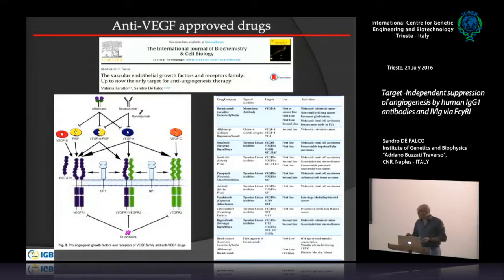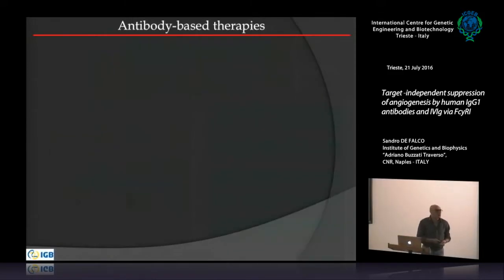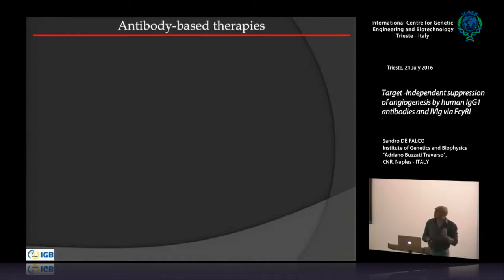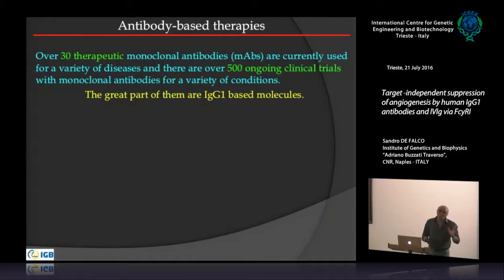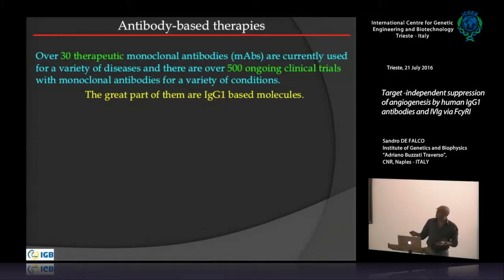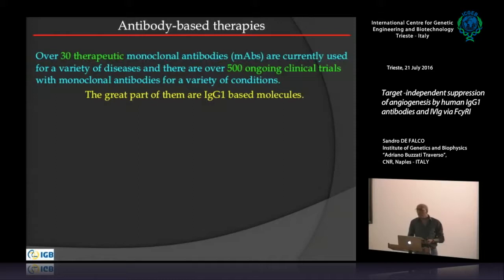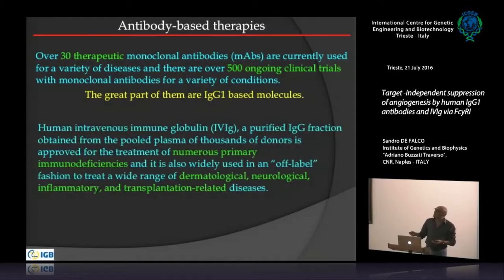The data I present starts from a simple observation made in collaboration with J.M. Bhatti of the University of Lexington, Kentucky. We are in the era of antibody-based therapy: there are more than 30 monoclonal antibody therapies and about 500 ongoing clinical trials, and a great part of them are IgG1-based molecules.